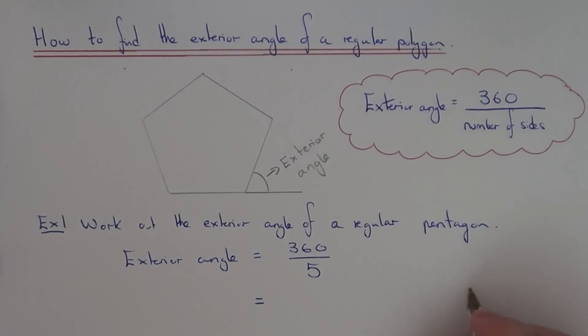So 360 divided by 5, let's do some short division. 3 divided by 5 is 0, remainder 3. 36 divided by 5 is 7, remainder 1. And 10 divided by 5 is 2.